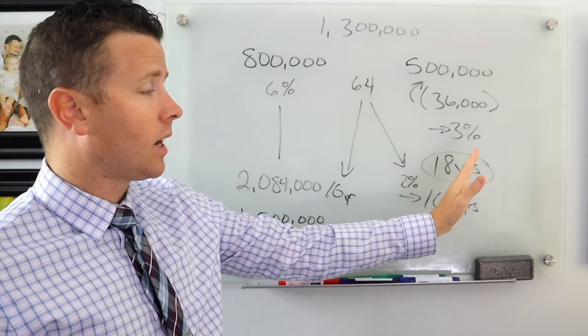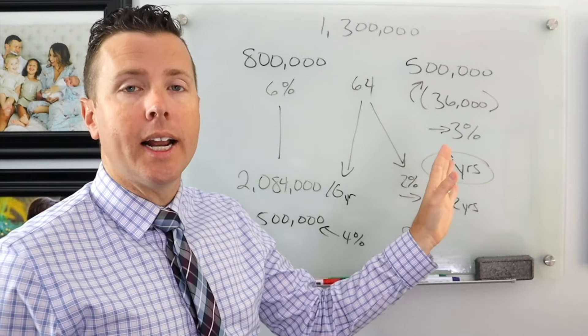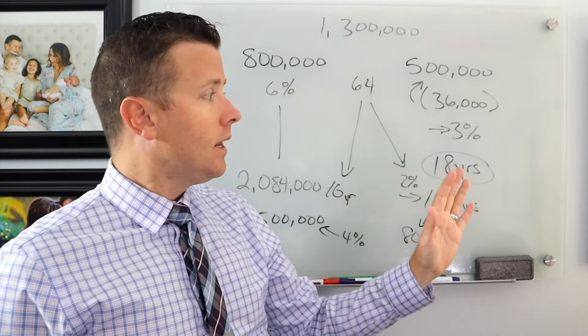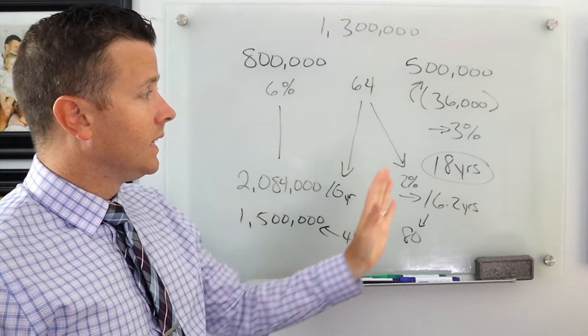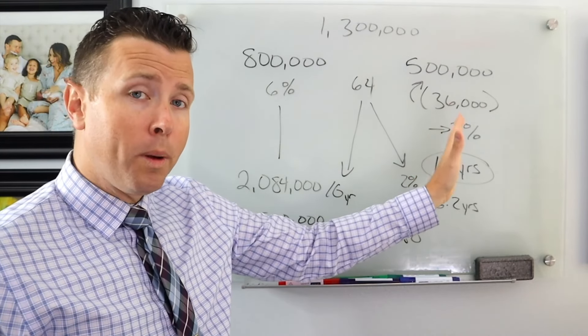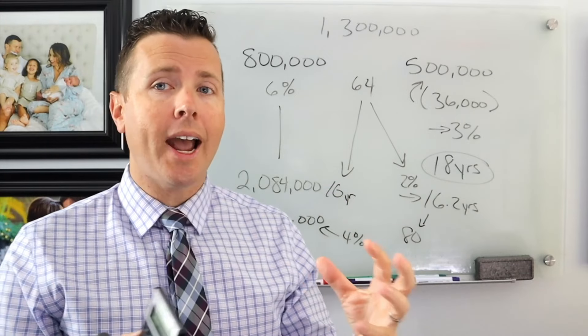If the market, let's say this conservative side doesn't average 3% or 2%, let's say it averages 5%, then this side is going to last a lot longer. And this side is going to go a lot longer. But then let's say this side only averages 1%. So then this is going to be less and this is going to be less. So you just need to have those scenarios.